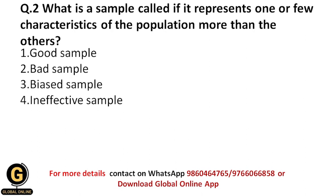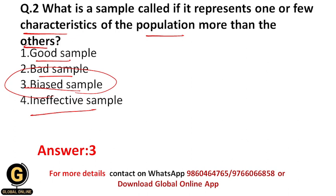Question two: What is a sample called if it represents one or few characteristics of the population more than the others — good sample, bad sample, biased sample, or ineffective sample? Such samples are called biased samples because the researcher selectively chose them based on those characteristics rather than randomly selecting. The researcher was biased in selection, so it is called a biased sample.